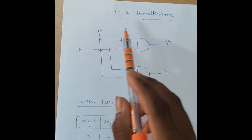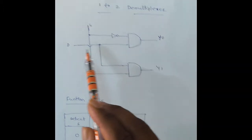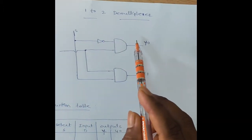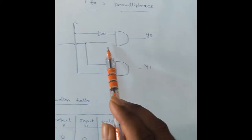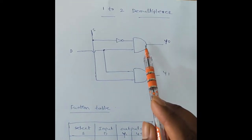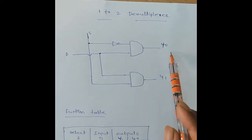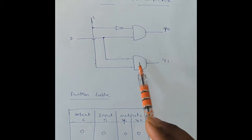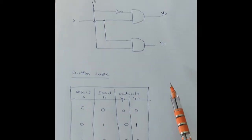In this circuit diagram, S is given to a NOT gate, and the output of the NOT gate is given to the first AND gate along with the D input. The output of the first AND gate is Y0, and the output of the second AND gate is Y1.